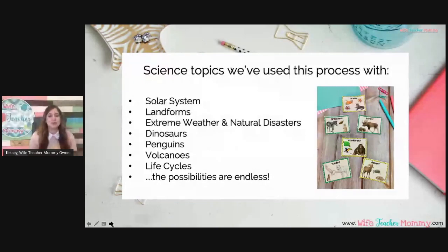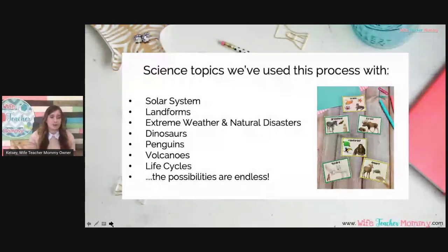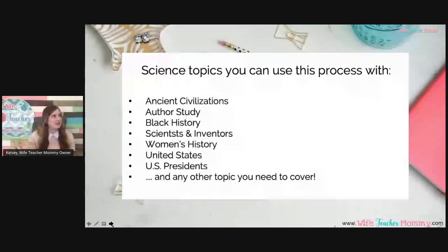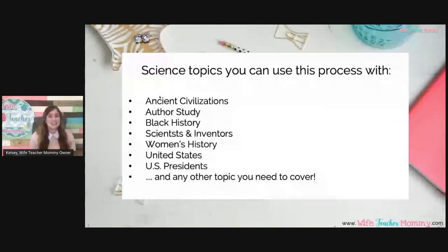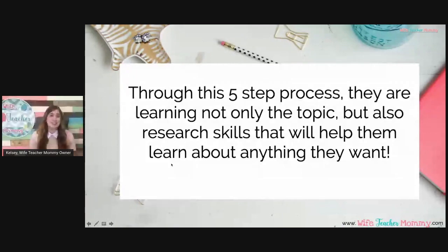Some science topics we've used this process with are solar systems, landforms, extreme weather, natural disasters, dinosaurs, penguins, volcanoes, and life cycles. You could do this with so many different topics, whatever you need to cover that year. Social studies topics include ancient civilizations, author studies, black history, scientists and inventors, women's history, United States, United States presidents, and any other topic you need to cover. Through this five-step process, students are not only learning the topic they're currently researching, but also developing critical research skills they can use to learn about anything — skills they'll use the rest of their lives.